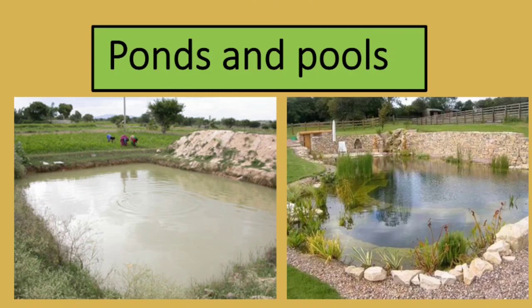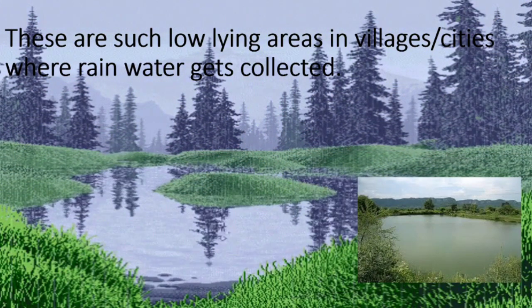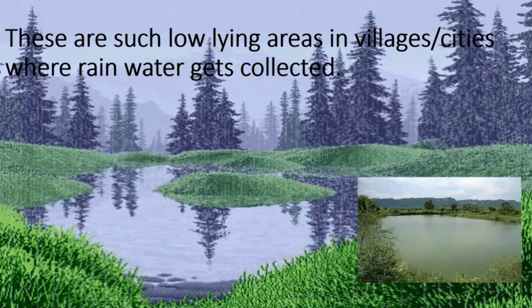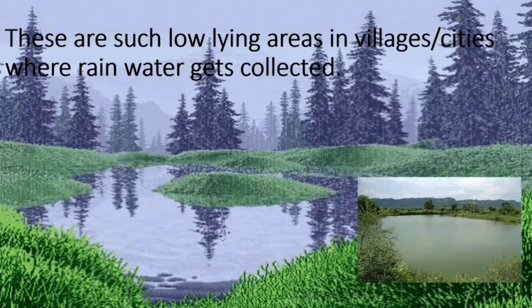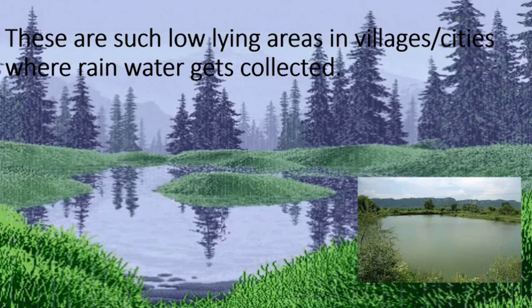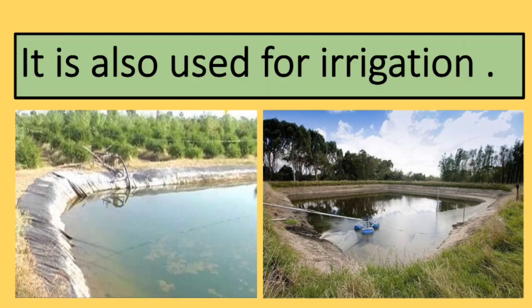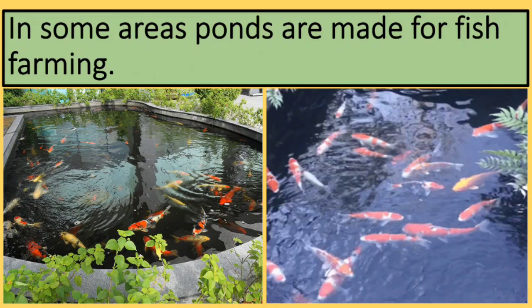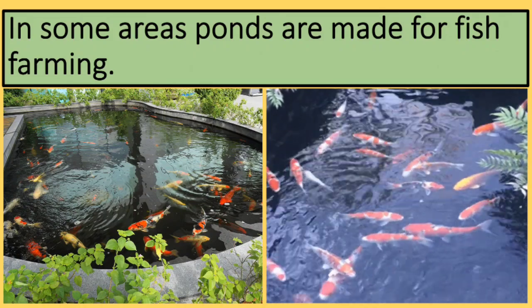Next are ponds and pools. You all might have seen them. In Punjabi, you can also call them chappad. These are low-lying areas in villages or cities where rainwater gets collected. The water collected in a pond or pool is also used for irrigation. In some areas, ponds are made for fish farming.